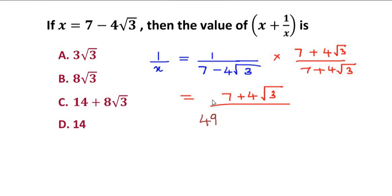And in the denominator we are going to multiply each term one by one. So 7 times 7 gives us 49, and 7 times plus 4 radical 3 gives us plus 28 radical 3. Now minus 4 radical 3 times 7 gives us minus 28 radical 3, and minus 4 radical 3 times 4 radical 3.